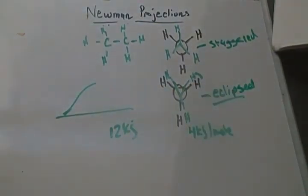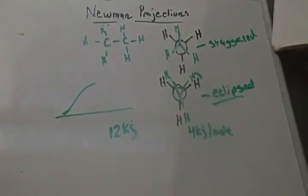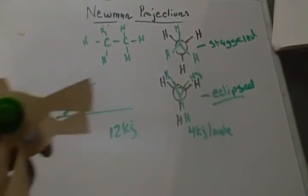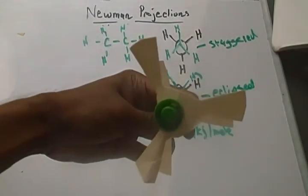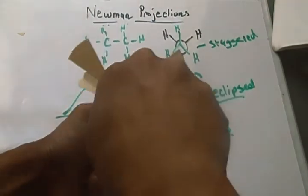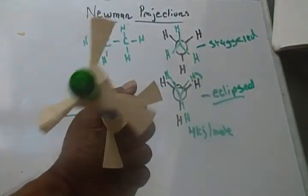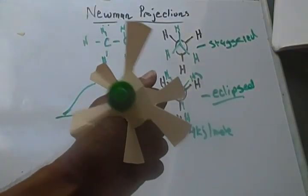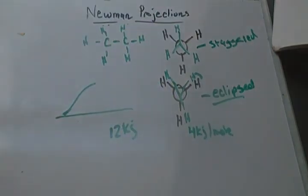So now, if I rotated it again by 60 degrees, so this is that eclipsed state that it's in. If I rotate my front carbon again, now it's back to its staggered state. And let me draw that out.